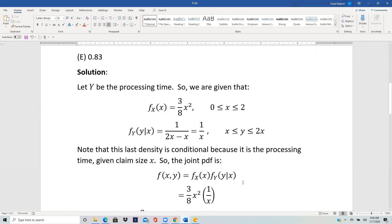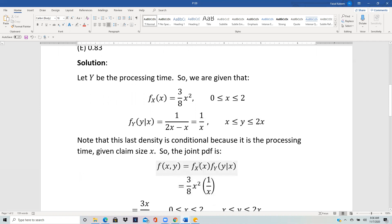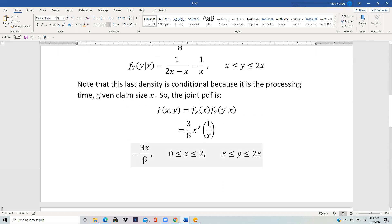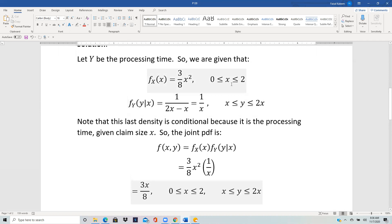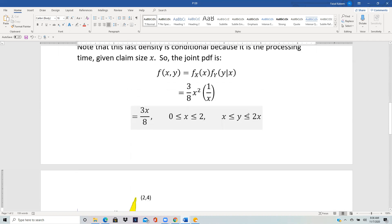Y goes from x to 2x, and then the joint pdf, as we've seen a couple of times before, it's the product of f_X(x) and f(y|x). So you multiply this and this and you get 3x by 8 and the two bounds: x from 0 to 2 and y from x to 2x.